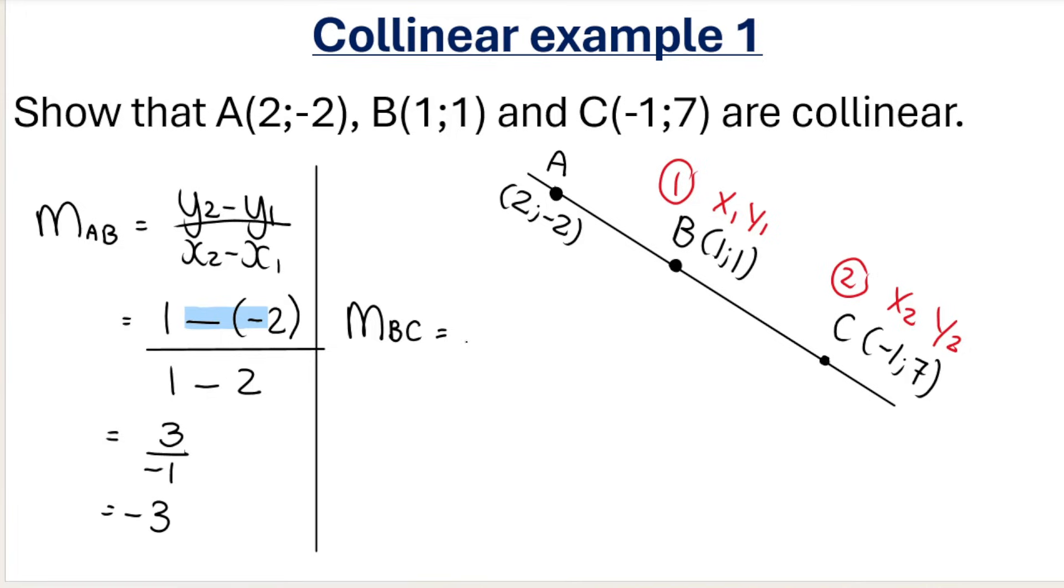Remember, always Y is at the top. So Y2 is 7 minus Y1, which is 1. X2 is -1 minus X1, which is 1. At the top, I have 7 minus 1, which is 6. At the bottom, I have -1 minus 1, which is -2. Six divided by -2 is -3.